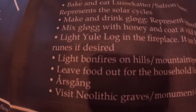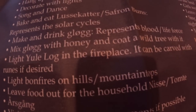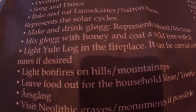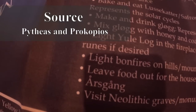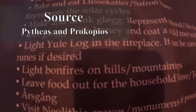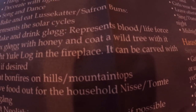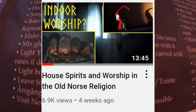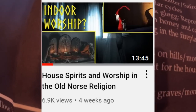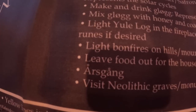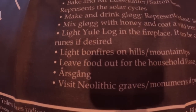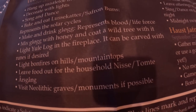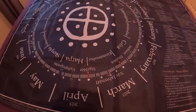At the winter solstice you can light bonfires on the hills and mountaintops — some ancient Greek historians wrote about this on their travels to Scandinavia. Also a popular Swedish folk tradition: you can leave food out for the household nisse or tomte. You can also practice Årsgång — mostly a Swedish tradition — the yearly walk where you would get prophecies and wisdom. You can visit Neolithic graves or monuments nearby, as many of them align perfectly with the winter solstice light.